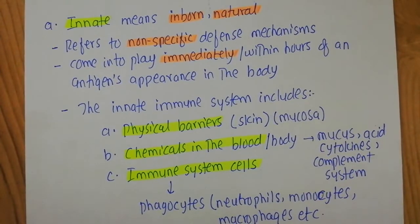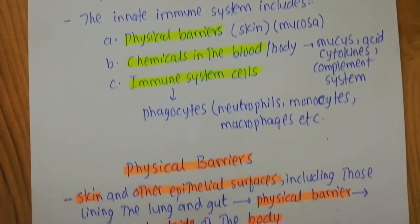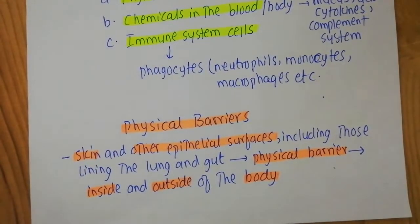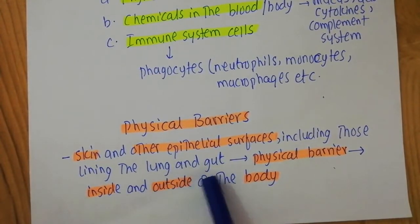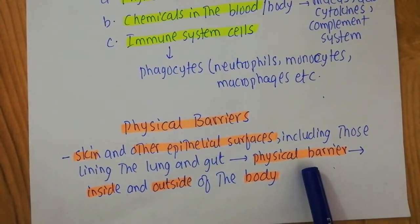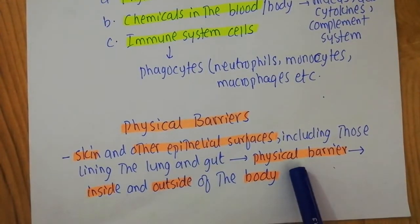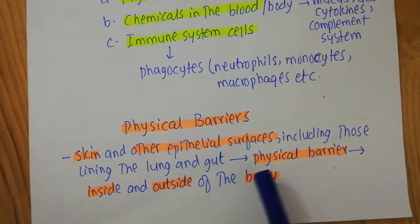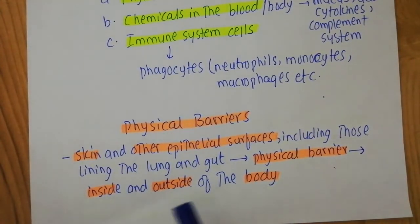In the following videos I'll be talking about these chemicals in the blood or body, and then we will talk about the immune cells. The most important physical barriers included in the innate immune system are the skin and other epithelial surfaces, including those lining the lungs and the gut. These physical barriers are actually working as a barrier separating the interior and the exterior of the body.